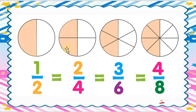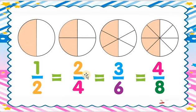Now the second figure: how many parts? One, two, three, four — four parts. So we write four in the denominator. How many parts are shaded? Two parts are shaded. So we write two in the numerator. That's why we write two upon four — four is the whole part and two is the shaded part.